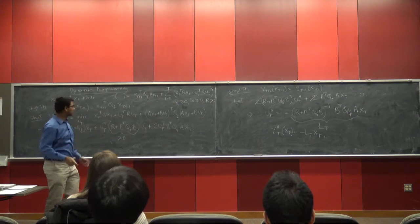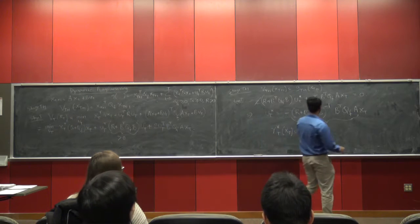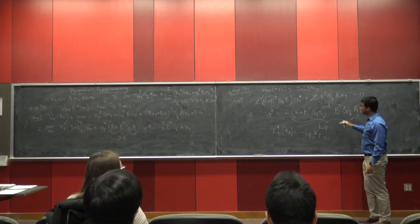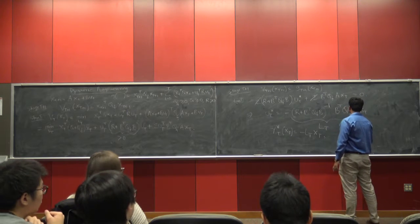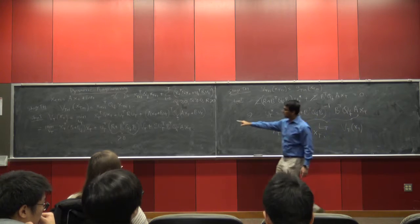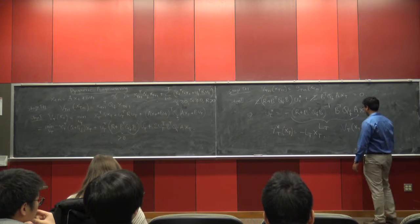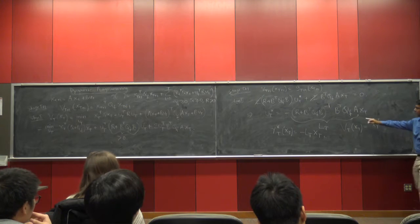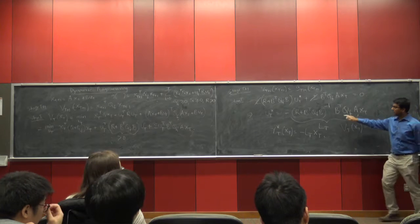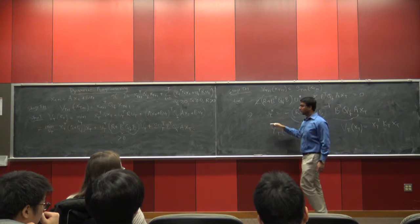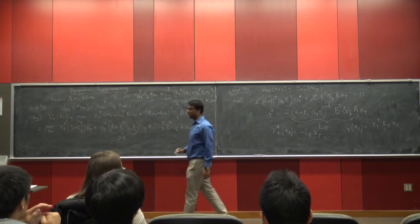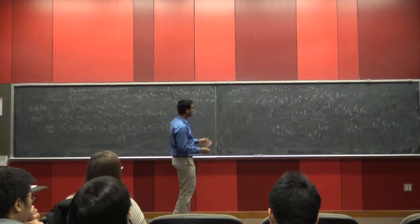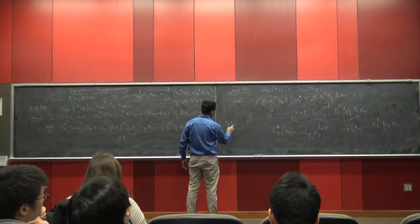Nowadays people resort to approximation techniques because the nice assumptions we made here don't hold in most modern systems. If you go back one step and compute V_T(x_T) by plugging in the optimal solution, you get it in the form x_T^T K_T x_T. Every time you have Q_f, you replace it with K_T, and you get the optimal control strategy for u_{T-1}, u_{T-2}, and so on. This method is known as LQR — the Linear Quadratic Regulator.